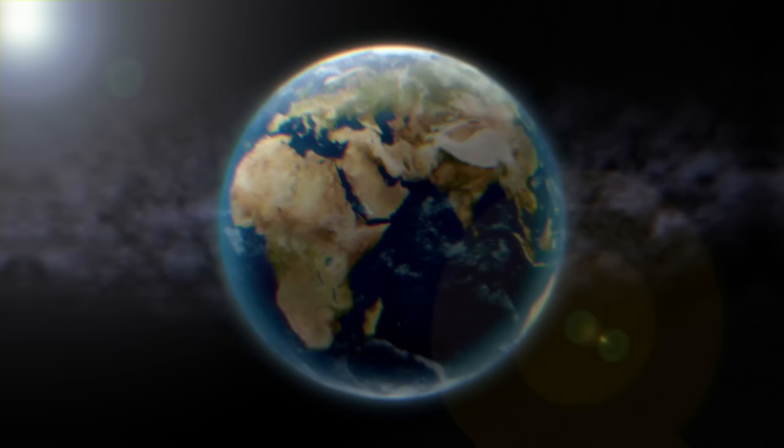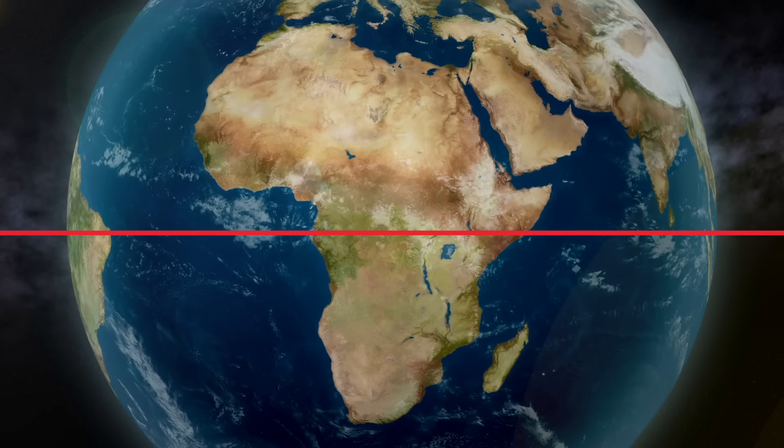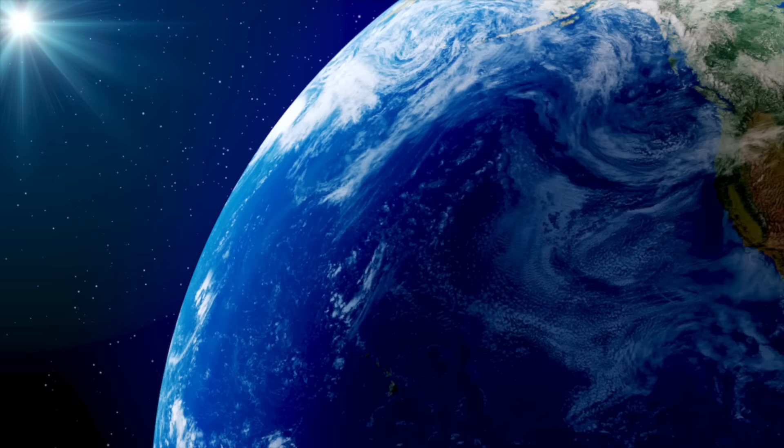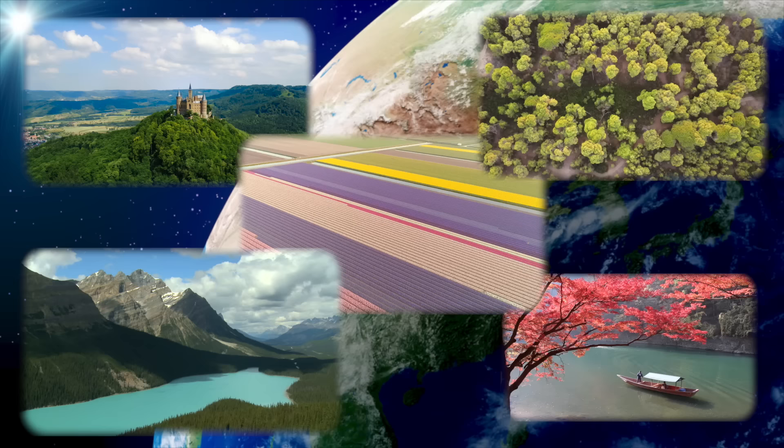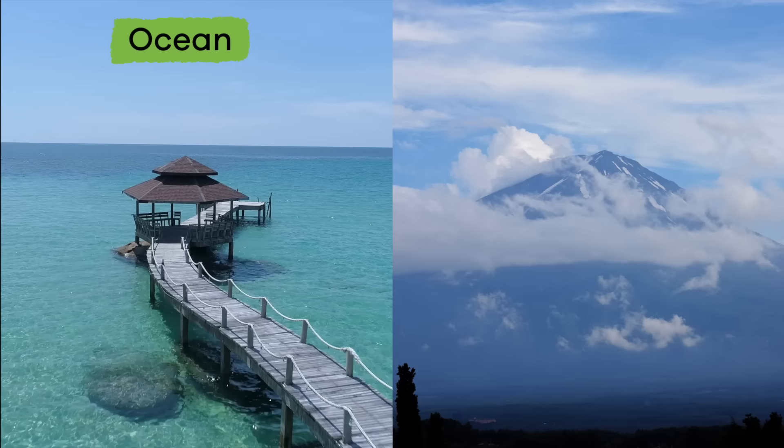Weather also depends on a place's distance from the equator, which is an imaginary line that separates the northern and southern halves of the Earth. The closer a place is to the equator, the warmer it will be. In fact, where you live on the planet has a huge impact on what weather you will see. For example, the weather near the ocean is often a lot different than the weather near a tall mountain range.